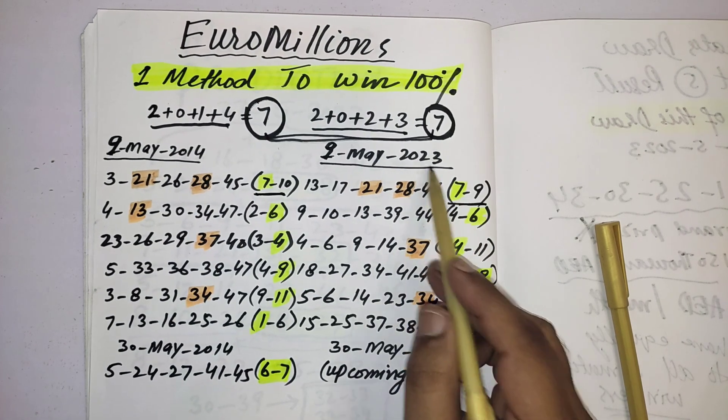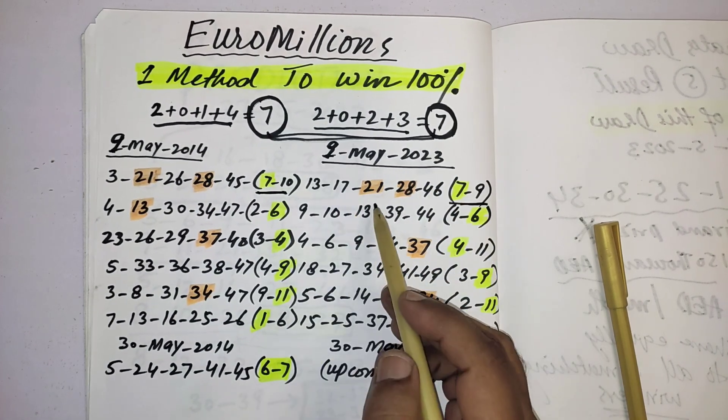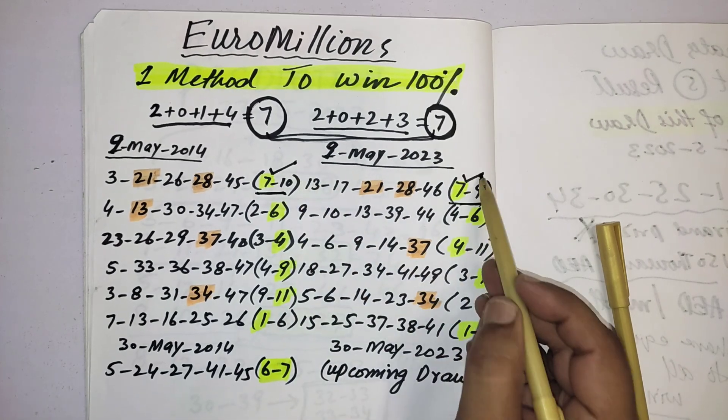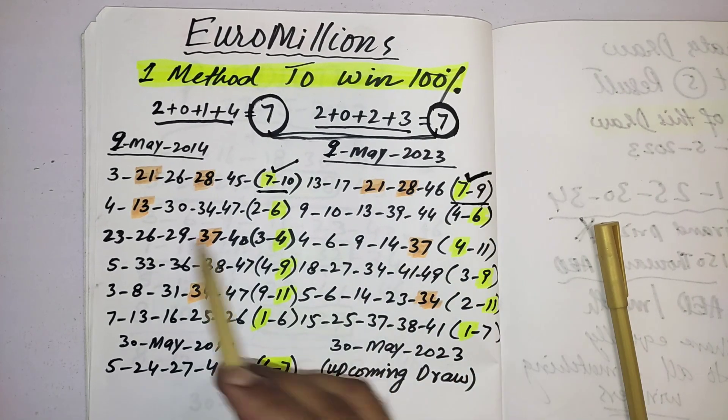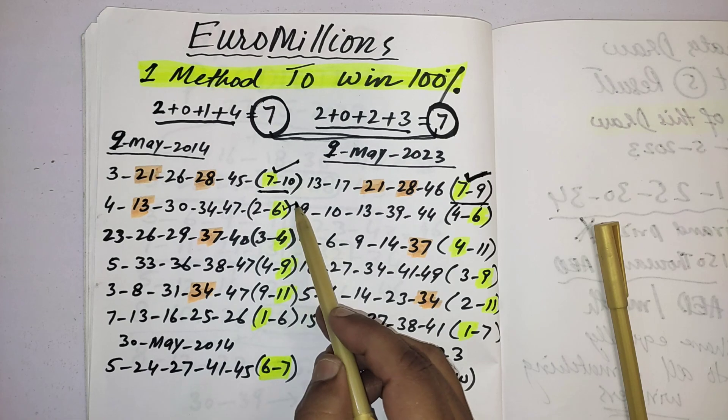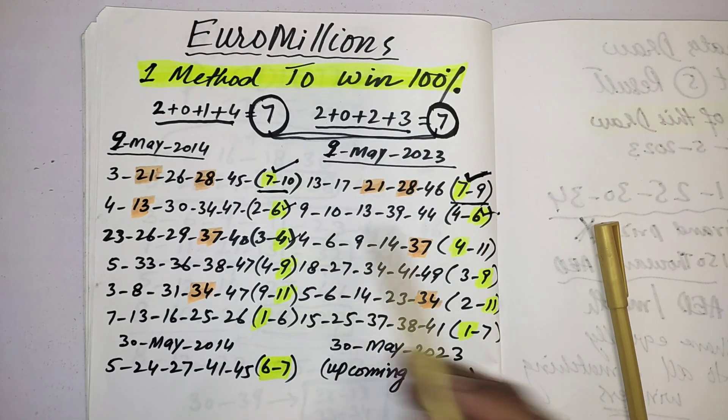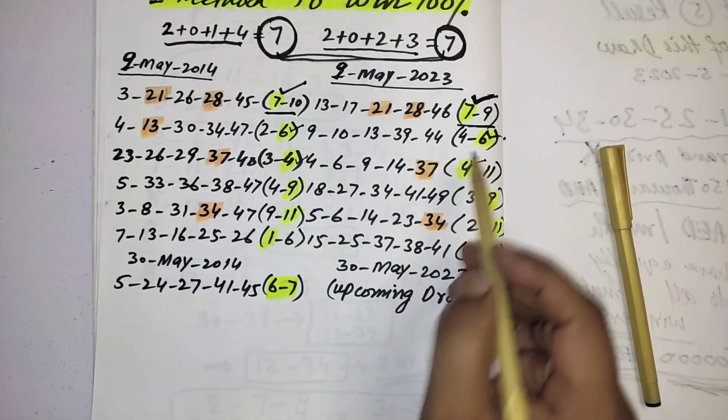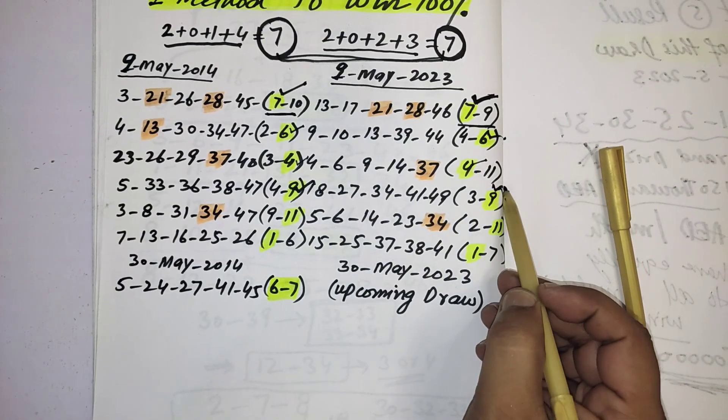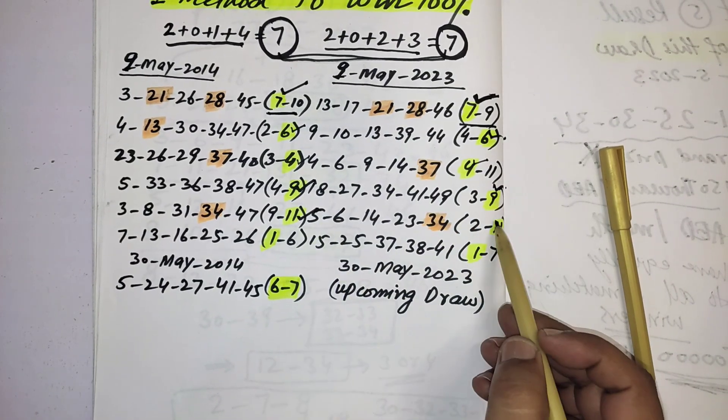In the same dates, one number picked in both draws. You can see next draw six number, here is also six number. Three four, here is also you can see four. Nine nine, eleven eleven, one one.